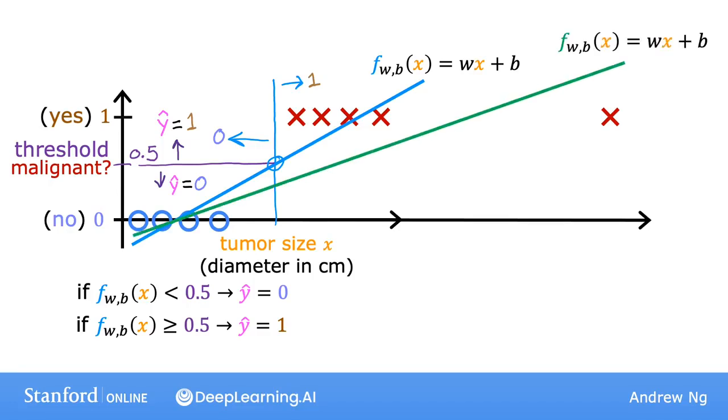And if you continue using the threshold of 0.5, you now notice that everything to the left of this point is predicted as zero, non-malignant, and everything to the right of this point is predicted to be 1 or malignant. This isn't what we want, because adding that example way to the right shouldn't change any of our conclusions about how to classify malignant versus benign tumors. But if you try to do this with linear regression, adding this one example, which feels like it shouldn't be changing anything, it ends up with us learning a much worse function for this classification problem.